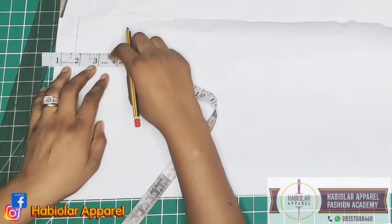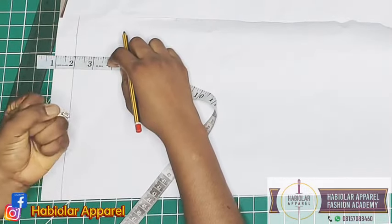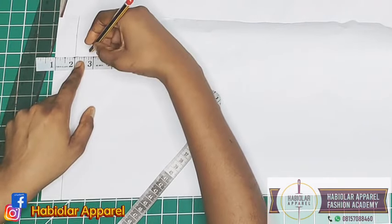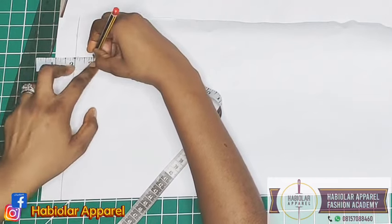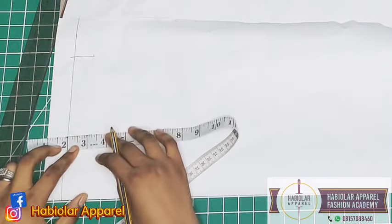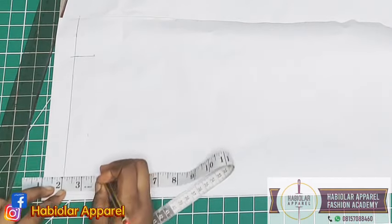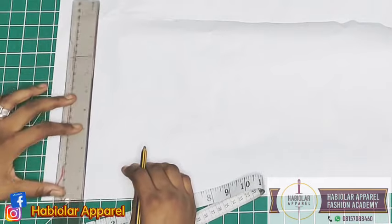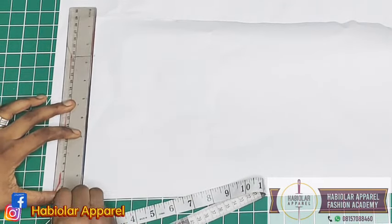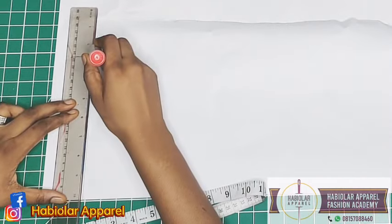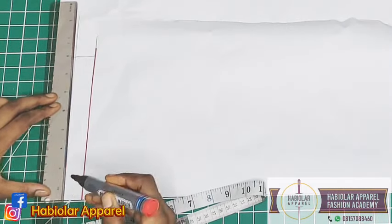Remember the front neckline that we measured was four inches and the back was 3.5. So four plus 3.5 gives us 7.5. Please, yours can be more or less, so use your own measurement. The next thing is to determine the collar width. I'll just use one inch. Between one to 1.5 or 1.25 is fine.